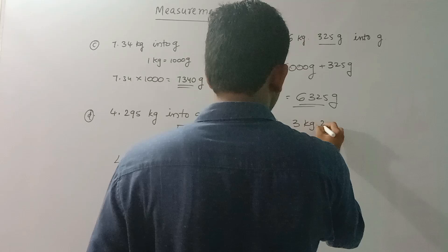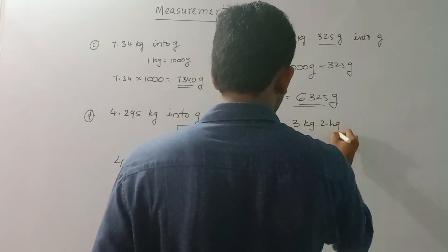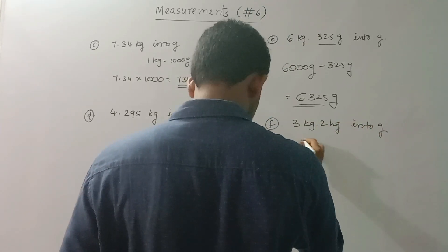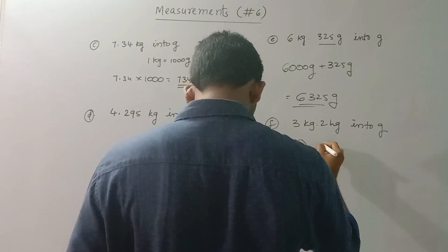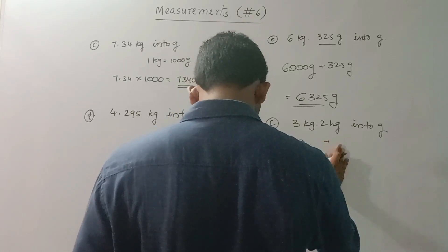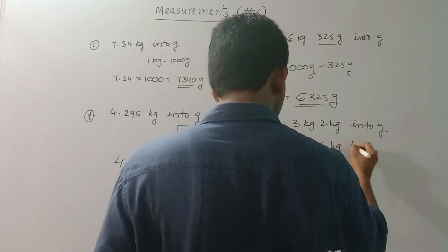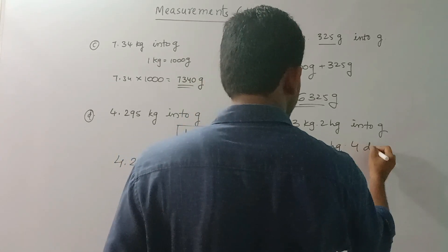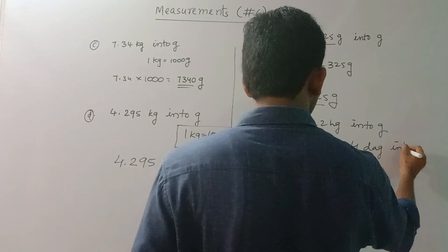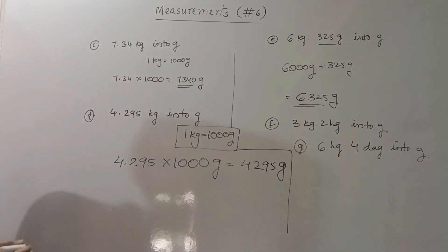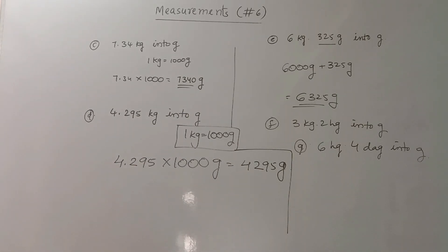We will put 2 hectograms into grams. Next, 6 hectograms and 4 decagrams into grams. You know grams, so you can mark it. Two sums — you can mark them.